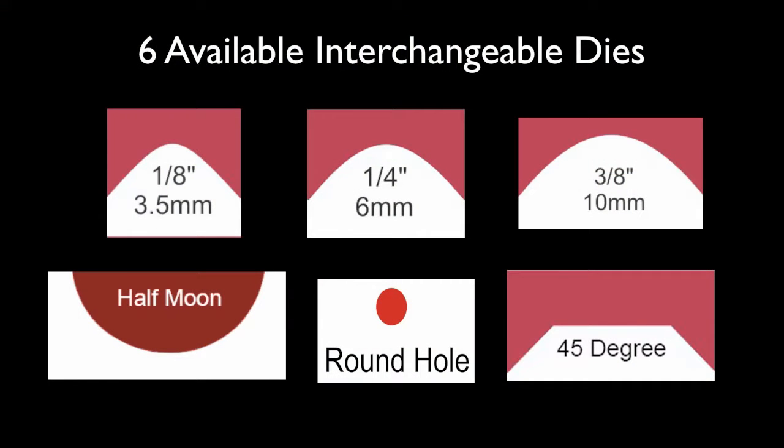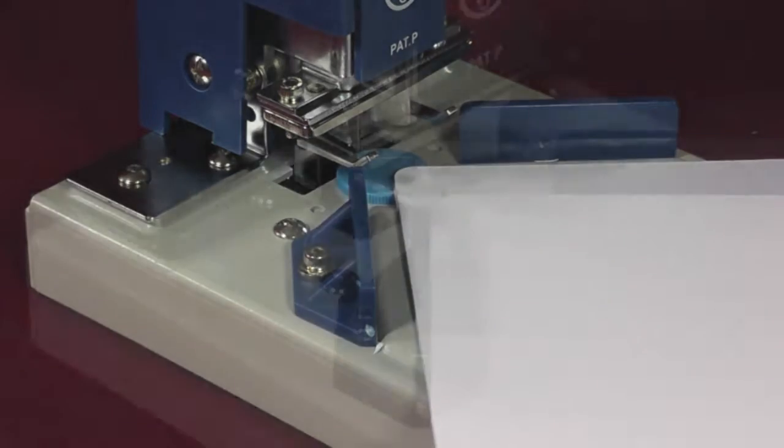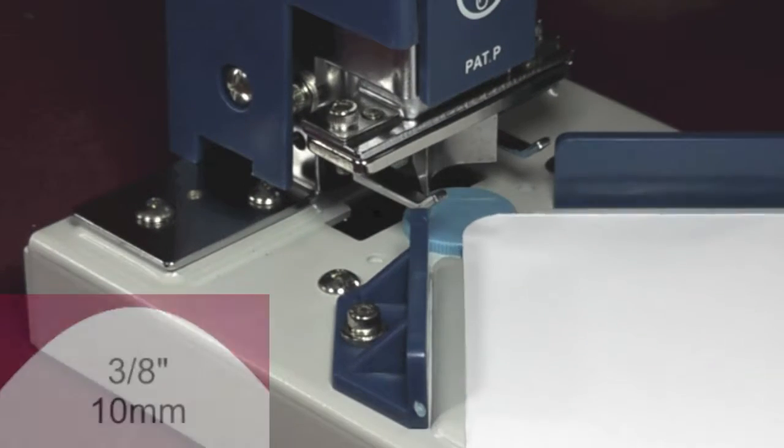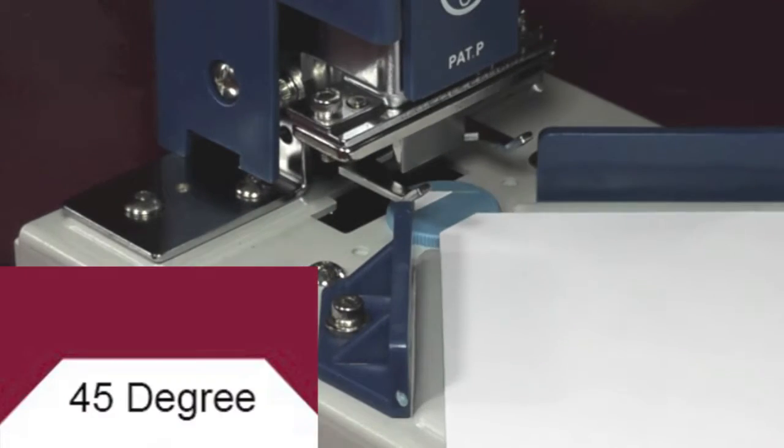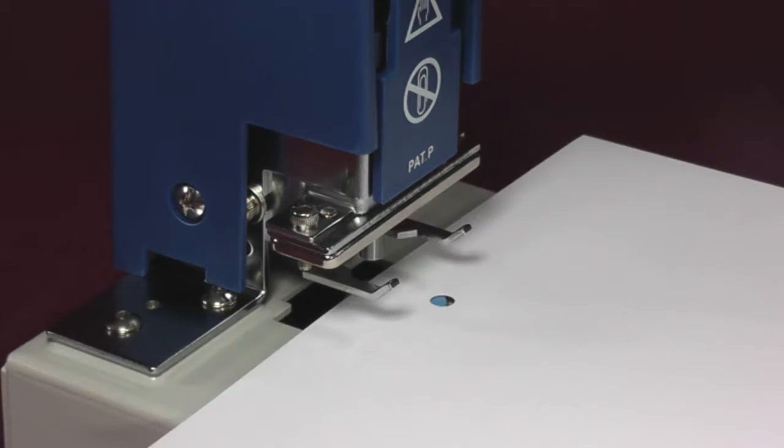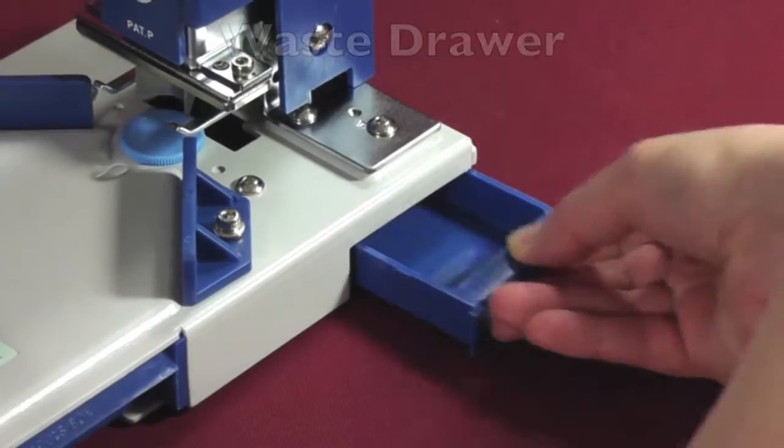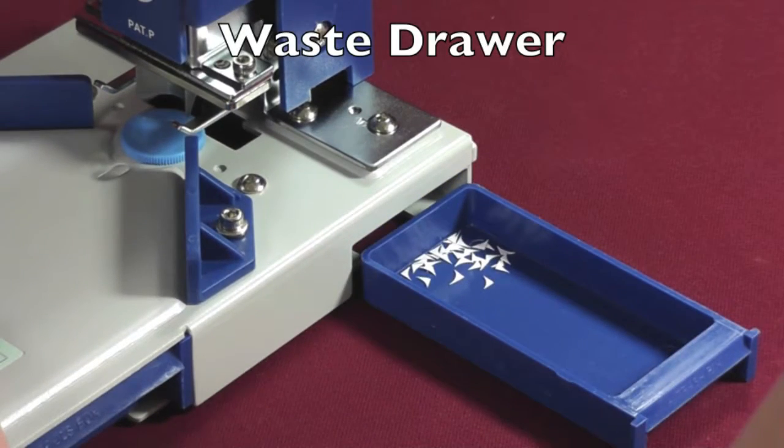The Diamond 1 also features an interchangeable die system which allows for six different die cut shapes, including the 1⁄8", 1 1⁄4", 3⁄8", 45 degree, round hole, and 1⁄2". A waste drawer assists for easy disposal.